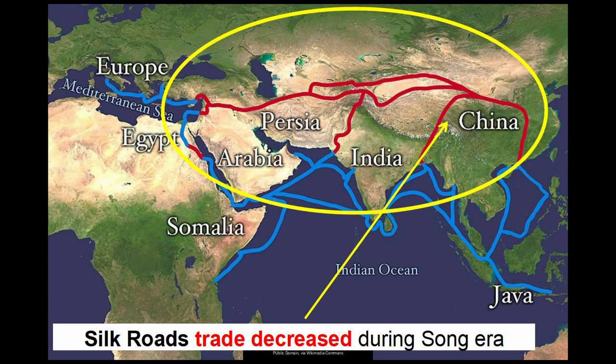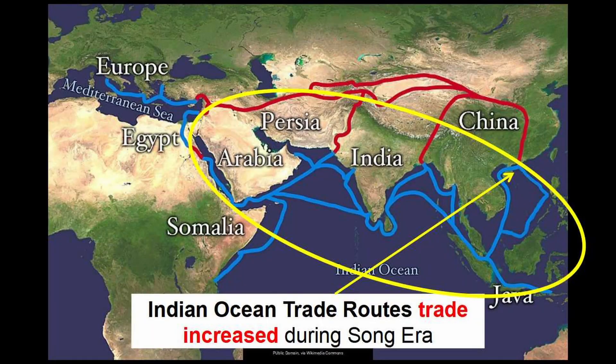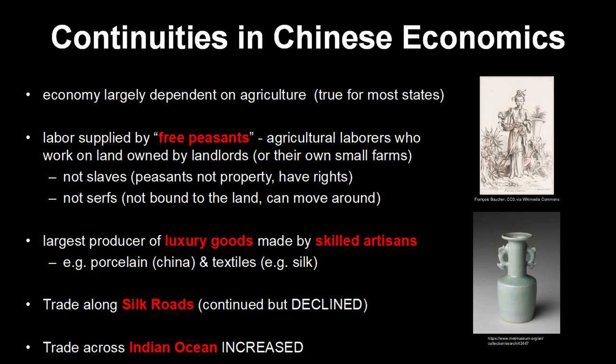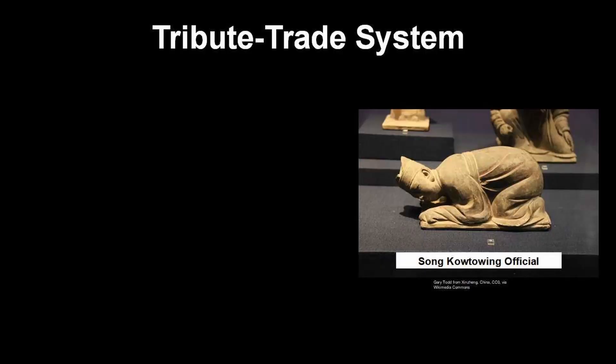There's a whole topic devoted to the Silk Roads in Unit 2. During the Song Dynasty, trade on the Silk Roads was in decline because the Song didn't have the military strength to defend these routes like the Tang and Han had before them. But China also traded luxury goods on the vast Indian Ocean trade routes, and during the Song Dynasty, trade on the Indian Ocean increased just as trade on the Silk Roads was decreasing. These luxury goods had traditionally always been made with the skilled labor of artisans who specialize in making things — and just like centuries before, people around the world were buying lots of stuff made in China. Another economic continuity was the tribute trade system, a way that China interacts with neighboring states.